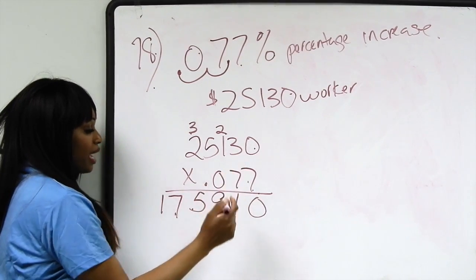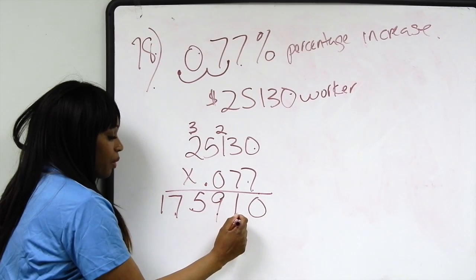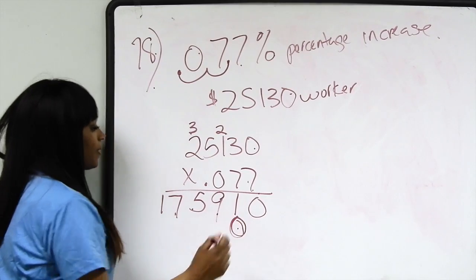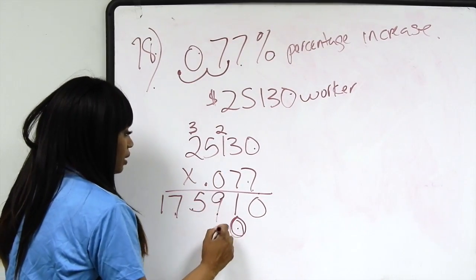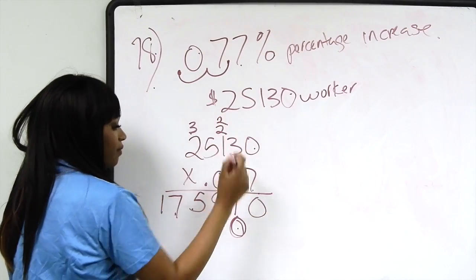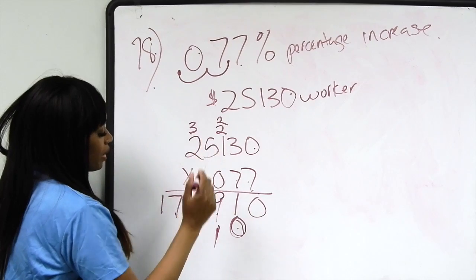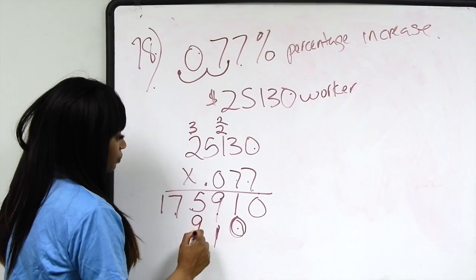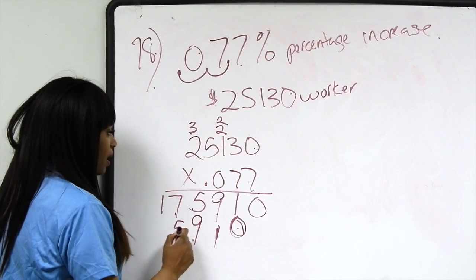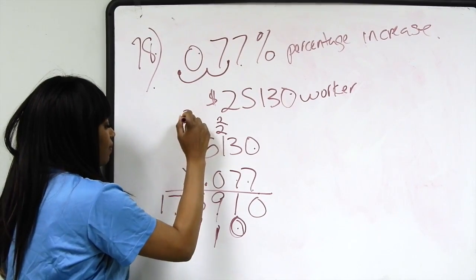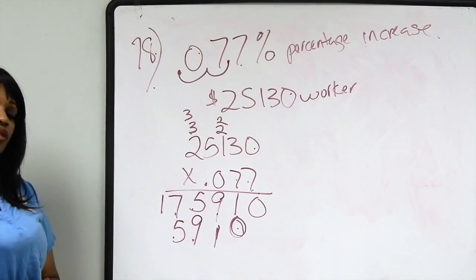Now, 7 times 3 is 21. Bring down the 1, carry the 2 one place to the left. 7 times 1 is 7, plus 2 more is 9. 7 times 5 is 35. Bring down the 5, carry the 3 one place to the left.